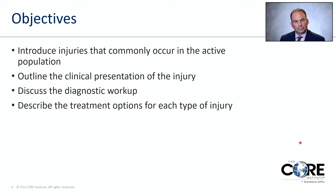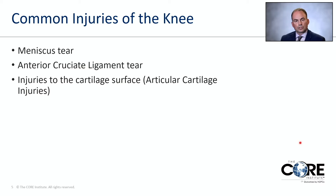The objectives tonight are to introduce injuries that commonly occur in the active population, to outline the clinical presentation of the injury, to discuss the diagnostic workup, and to describe the treatment options for each type of injury. The common injuries we'll discuss are the meniscus tear, the anterior cruciate ligament tear, and articular cartilage injuries.